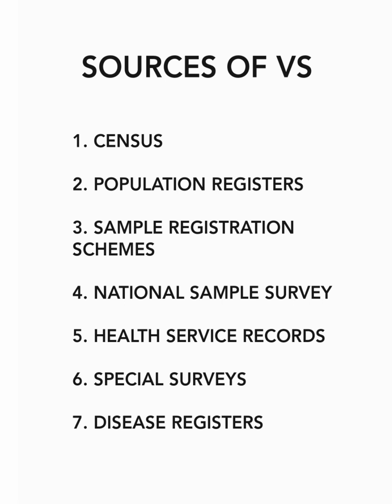How do we know about vital statistics? There are mainly 7 methods: 1. Census, 2. Population Register, 3. Sample Registration Scheme, 4. National Sample Survey, 5. Health Service Record, 6. Special Survey, and 7. Disease Register.